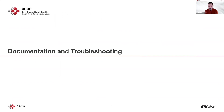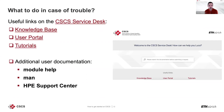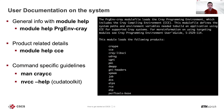The final part of the webinar covers documentation and troubleshooting. The main point of contact is the CSCS service desk at support.cscs.ch. The service desk provides three main links: knowledge base, user portal, and tutorials. Additional information is available on the system with 'module help', 'man' commands, or online at the HPE support center. For example, typing 'module help PrgEnv-cray' shows detailed information, and 'module help cc' gives information on the cc C compiler.